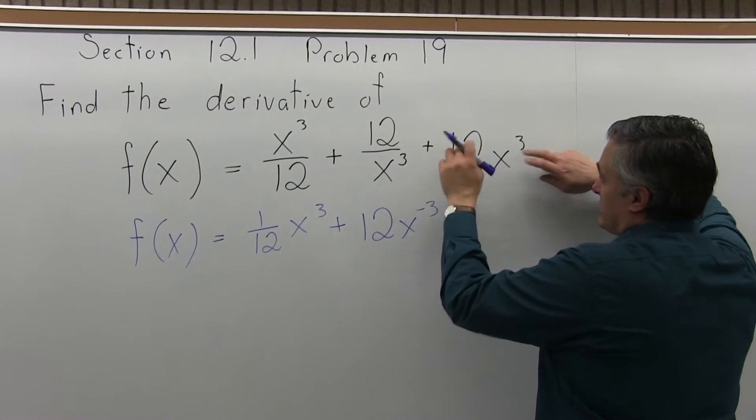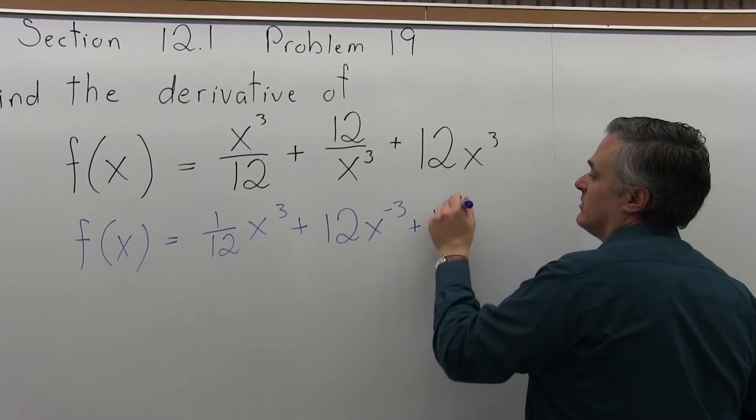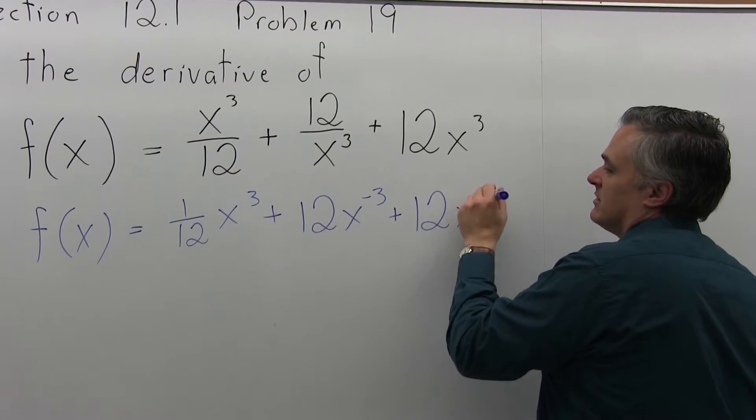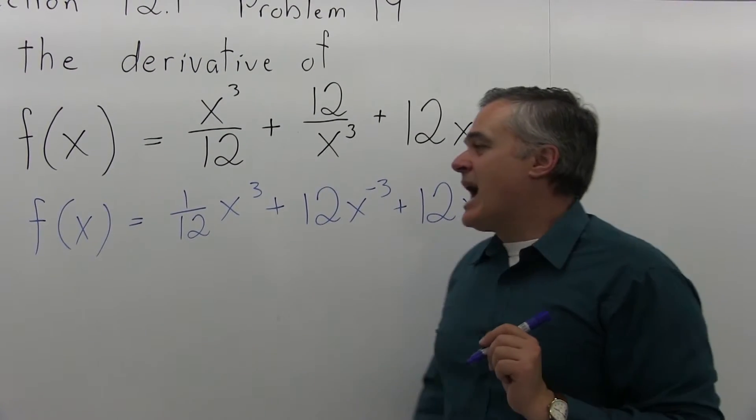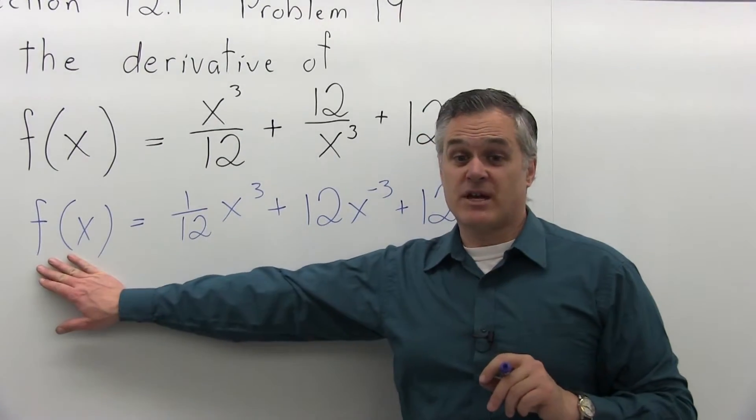And then the piece on the end, 12x³, is fine just the way it is. It will say 12x³. Now I'm ready to find f prime. So again, this was just still f(x).